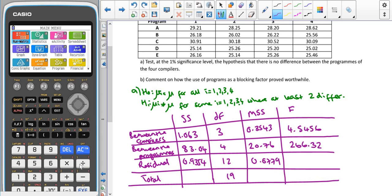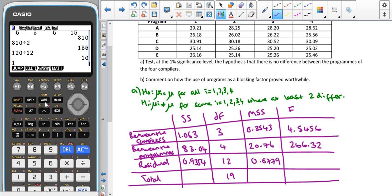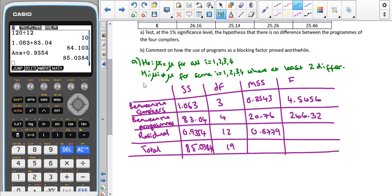Another way you can tell which of our rows is for the compilers and which is for the programs is that you can remember: we've got four compilers, and four minus one gives us a degrees of freedom of three. We've got five programs, five minus one is four, so we've got a degrees of freedom there of four. Just putting this value in here, that should be 85.0384.